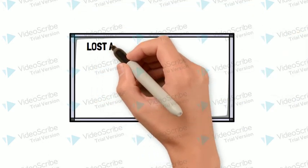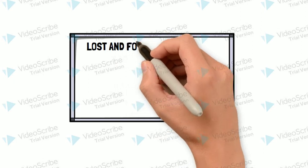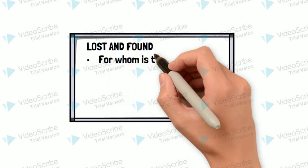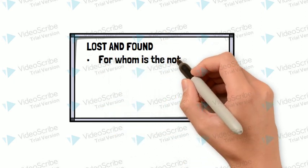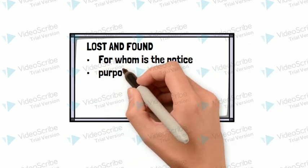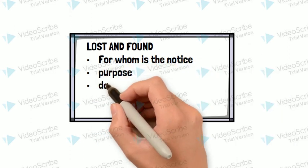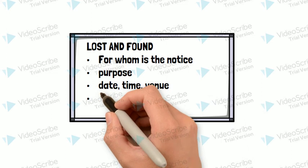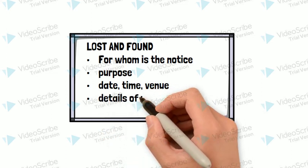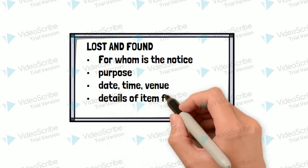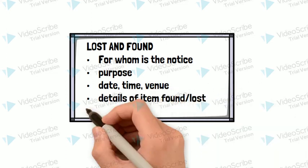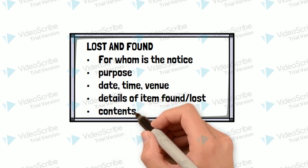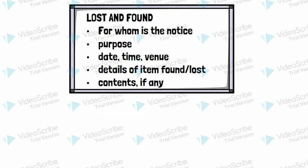Next are lost and found notices, which are usually found on the notice board. Here we need to mention the target audience, the purpose of writing the notice, the date, time, venue, details of the item found or lost, and contents if any.